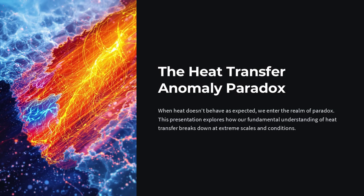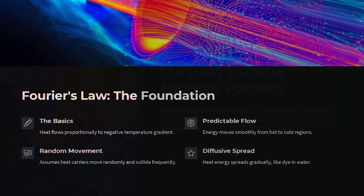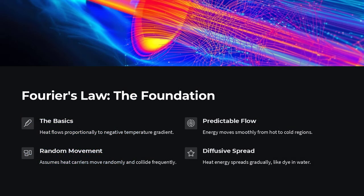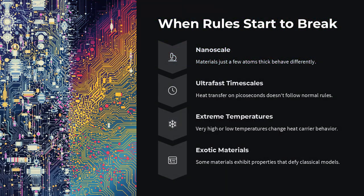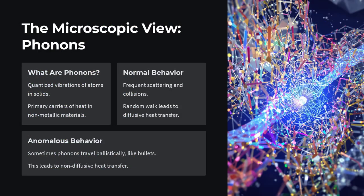Let's take a step back. Fourier's law states that heat flows proportionally to the negative temperature gradient — hotter to colder, smoothly and diffusively. It assumes that heat carriers, mainly phonons in solids, which are quantized vibrations of atoms, move randomly and collide frequently. The result is a gradual, diffusive spread of thermal energy, much like a drop of dye diffusing through water.